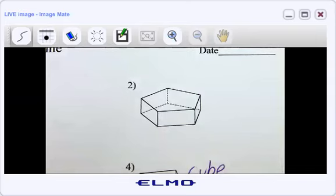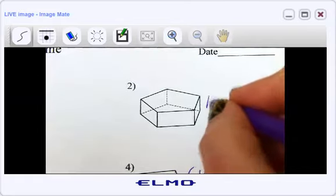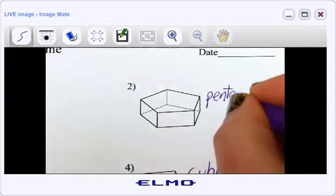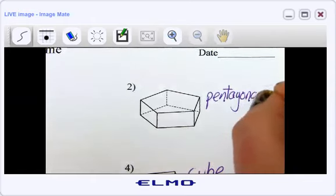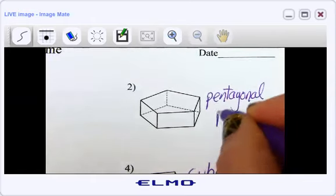So to name this thing, you're just going to take the shape of that base, which is a pentagon, and we just fancy it up and call it a pentagonal prism. That's all there is to it. So this is pentagonal. So notice pentagon. And then we just add AL to the end. Pentagonal prism.